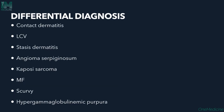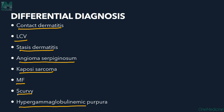Differential diagnoses for PPD include contact dermatitis, leukocytoclastic vasculitis, stasis dermatitis, angioma serpiginosum, Kaposi's sarcoma, mycosis fungoides, scurvy (due to capillary fragility), and hypergammaglobulinemic purpura.